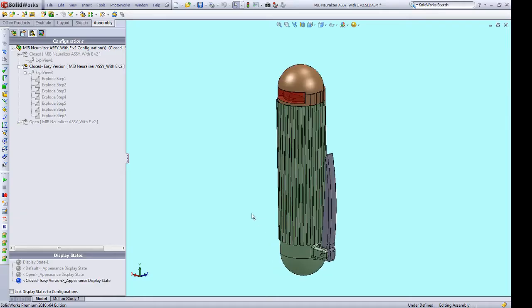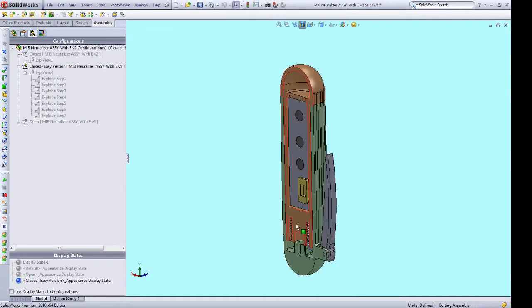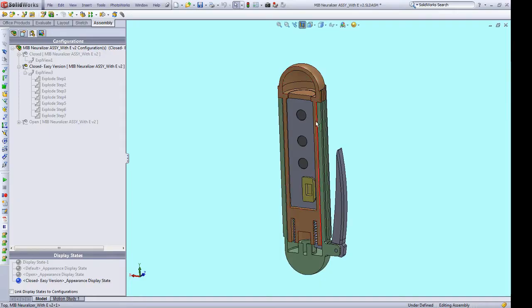Now I can do a section view to give you some more details. So when the Neuralyzer is pushed together, what provides the holding force to overcome the spring which is now compressed?